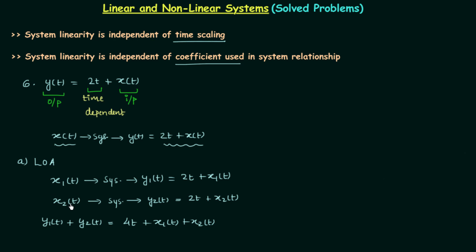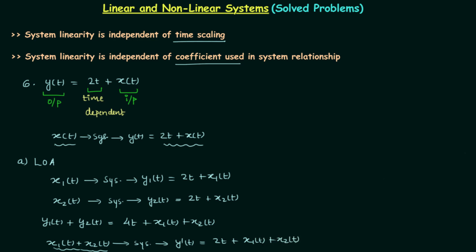Now in step two, we add the two inputs directly and feed them to the system: x1(t) + x2(t). The output y'(t) = 2t + x1(t) + x2(t), because the system adds 2t to the given input. Comparing the two results: 4t + x1(t) + x2(t) versus 2t + x1(t) + x2(t) — they are not the same.